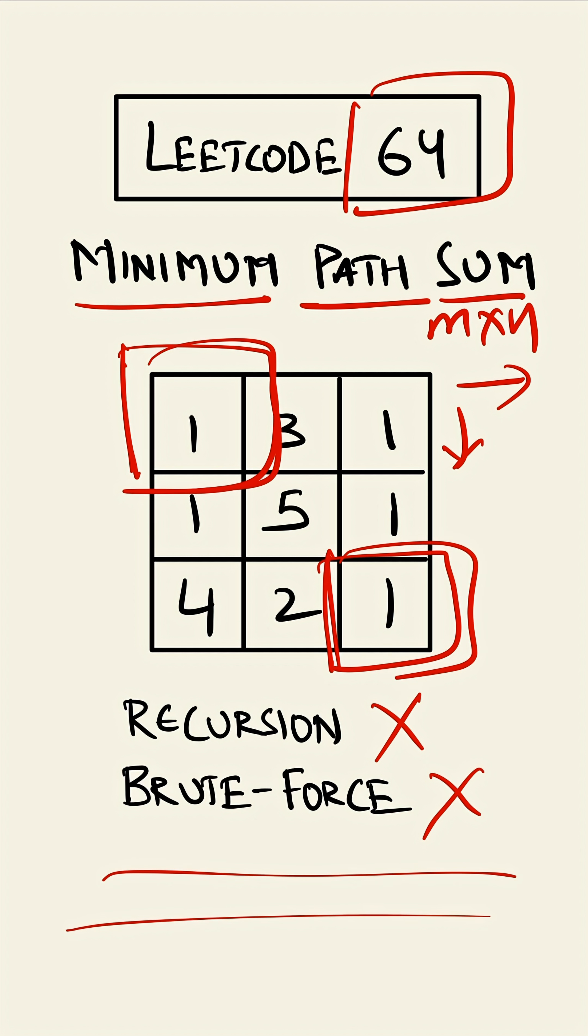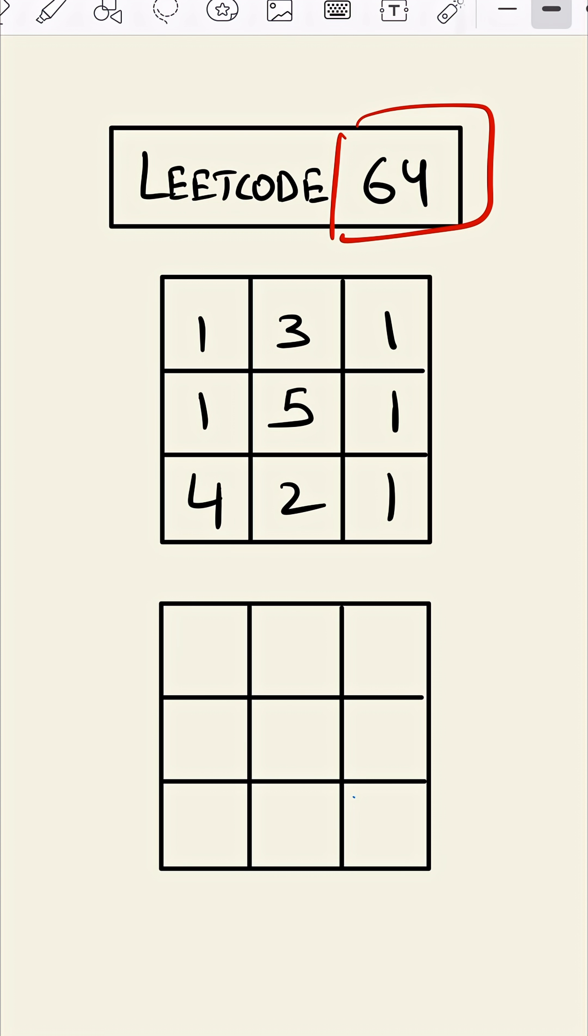Let's solve this question. We have to remember that we can travel only to right or downward. So to reach any grid, we can come from this side, from its left, or from the top. So the result of this grid will be the value of this grid plus the minimum of this or this. So we have to calculate for each and every grid what the minimum value is.